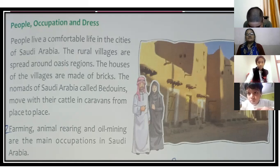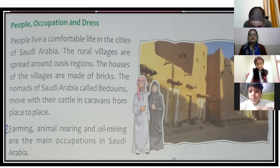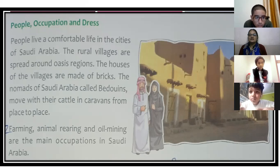The nomads of Saudi Arabia, called Bedouins, move with their cattle in caravans — groups of 10 to 20 people — from place to place in search of food, shelter, and water.